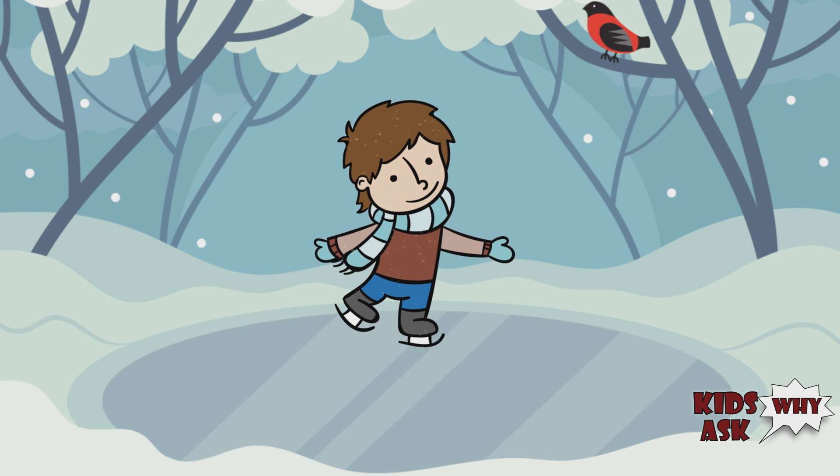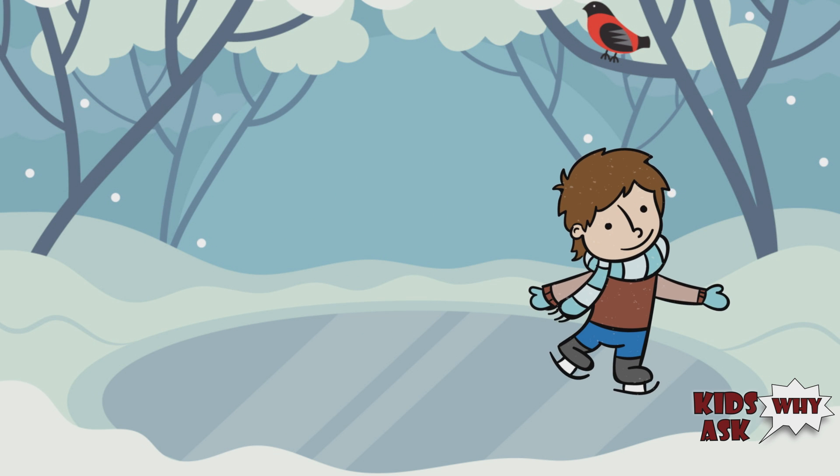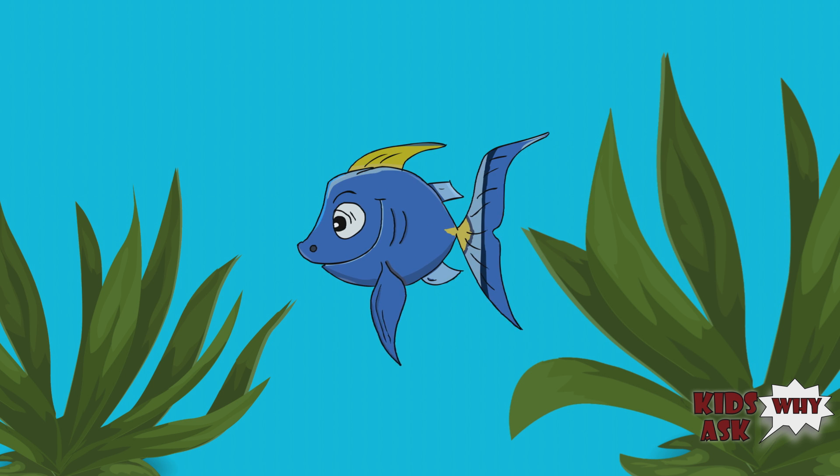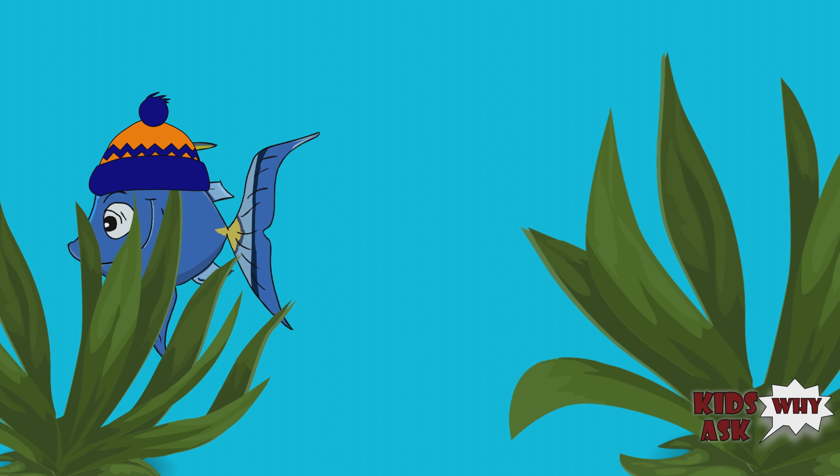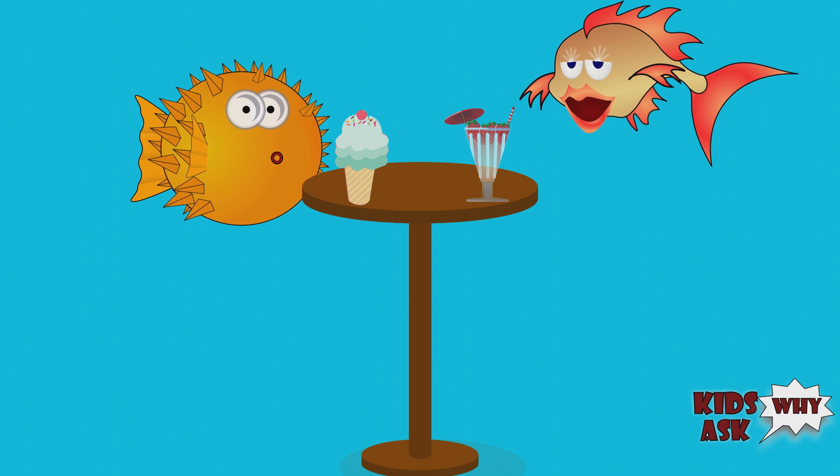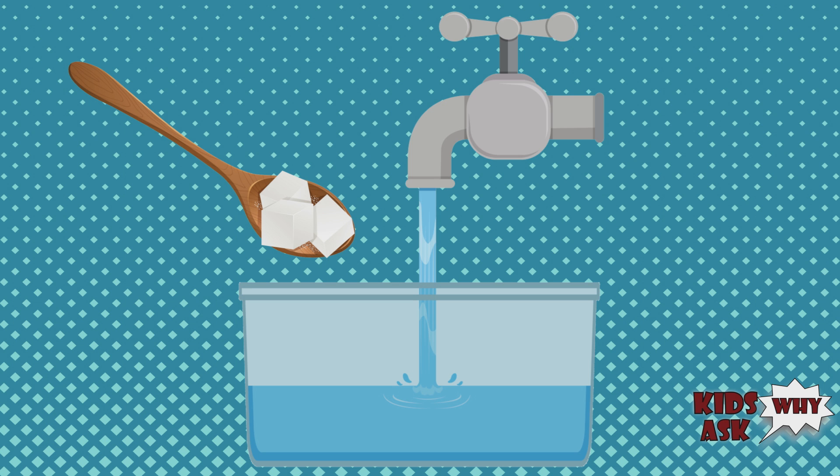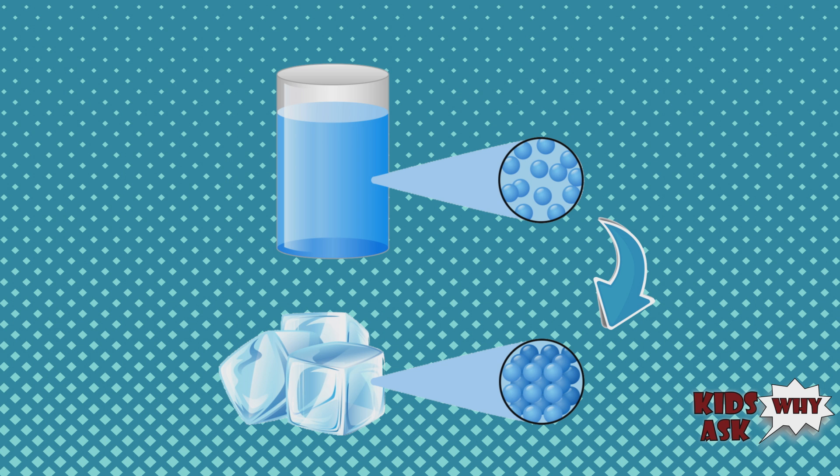Ice on the top of lakes and ponds in the winter actually insulates the water underneath, keeping it just above freezing, so fish can survive even the harshest winter chills without having to worry about freezing solid. If you add other substances to water, such as sugar or salt, the temperature drops below 32 degrees Fahrenheit before ice begins to form.